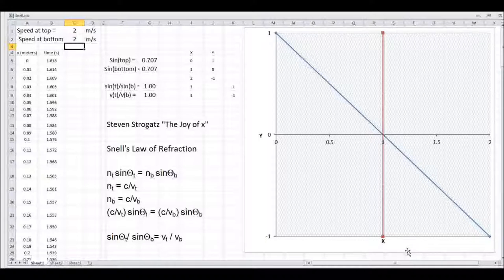I've actually done a simulation to show this is true. So let's imagine that in the top field, which is very smooth, you can move two meters per second, but in the bottom field you can only move one meter per second.